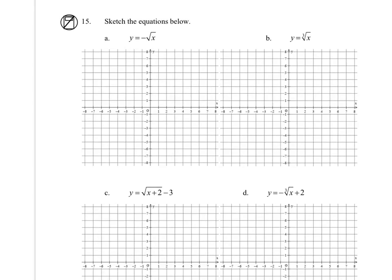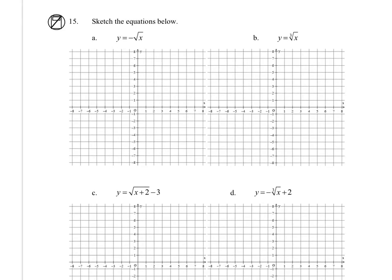Sketch the functions. So for a, we have the square root of x, but with the negative coefficient, meaning it's been reflected over the x-axis. I'm going to start with my endpoint of 0, then I'm going to pick nice numbers that I can get a square root of.